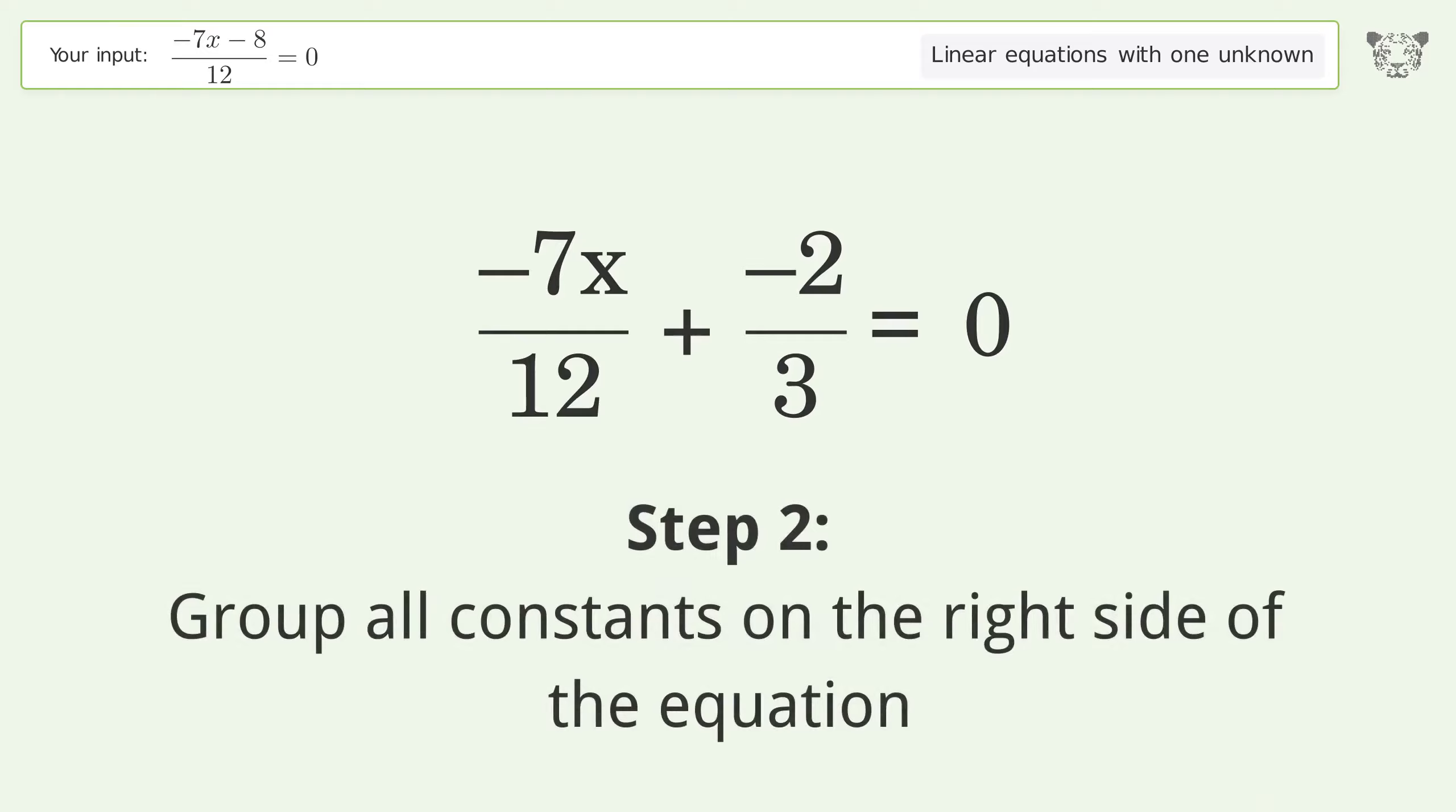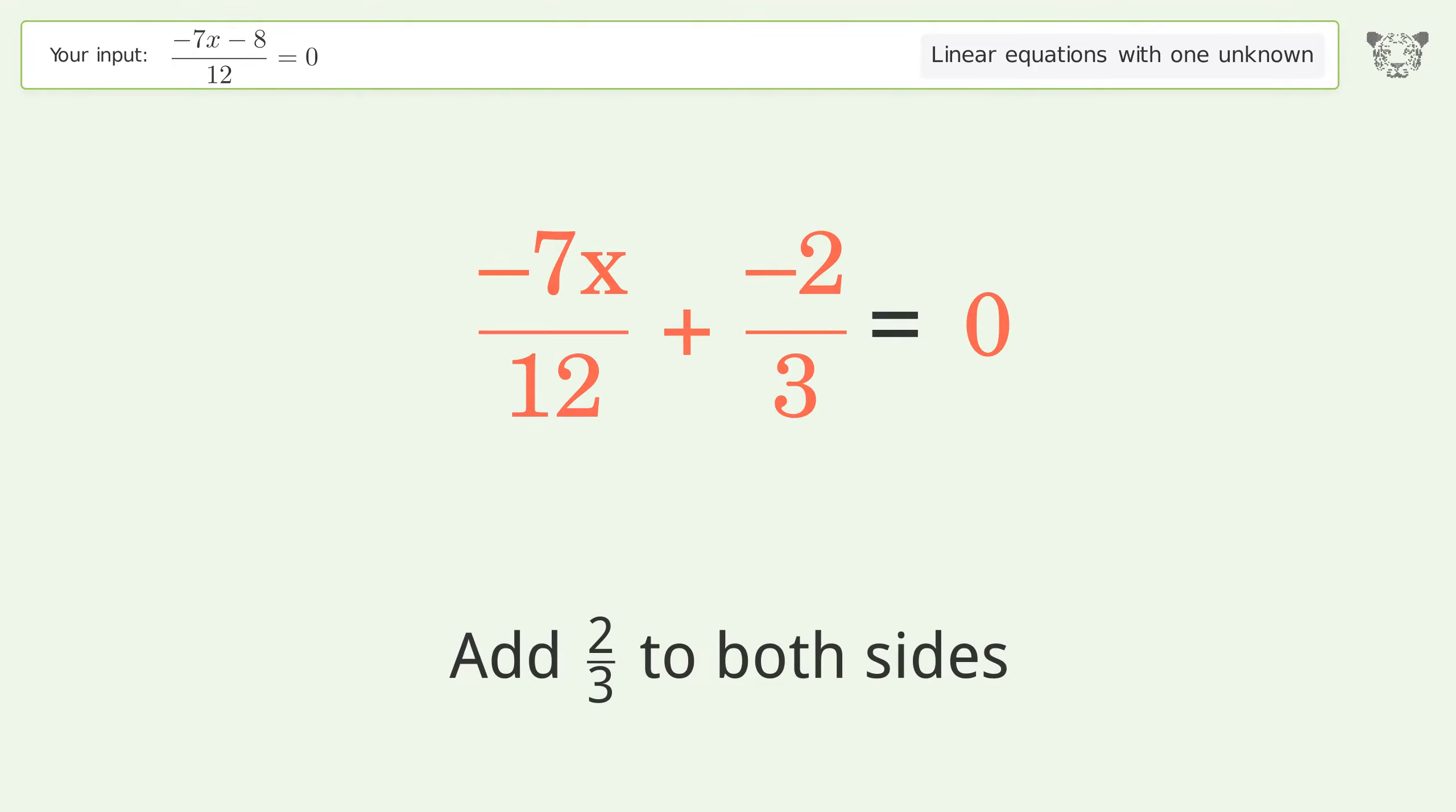Group all constants on the right side of the equation. Add 2 over 3 to both sides.